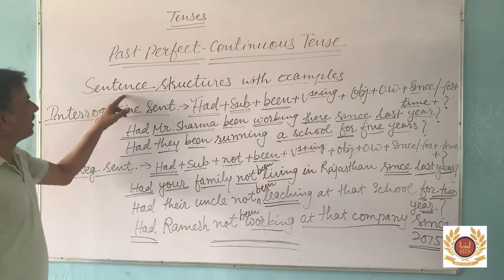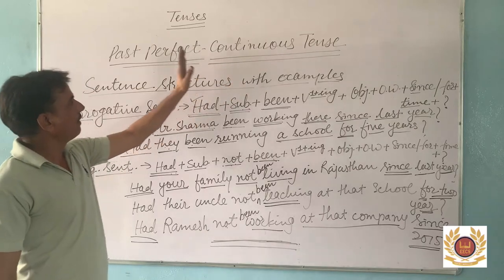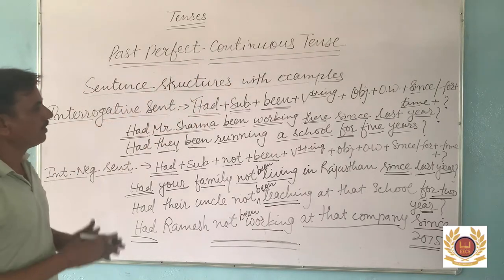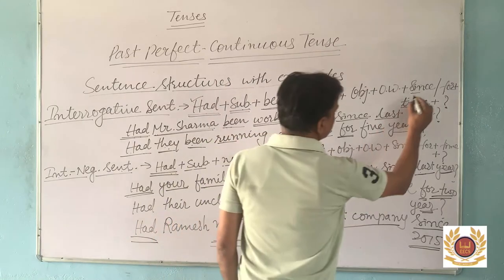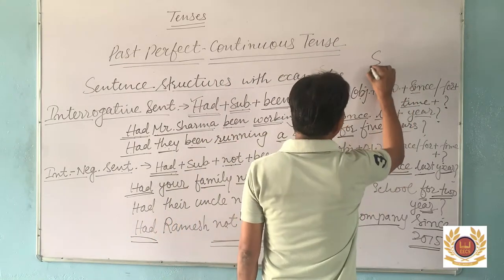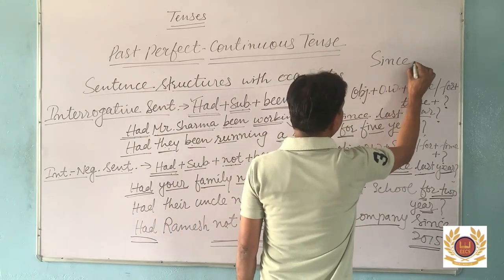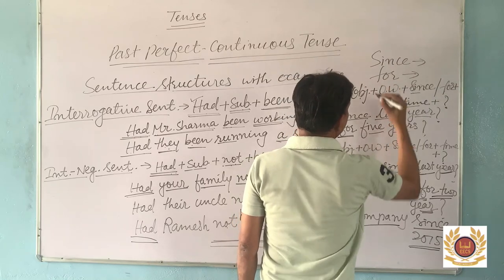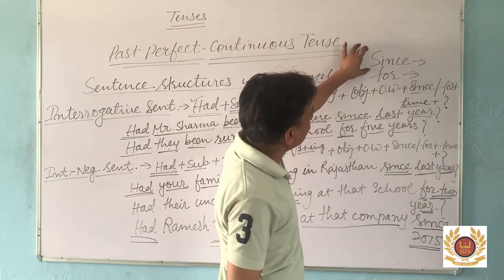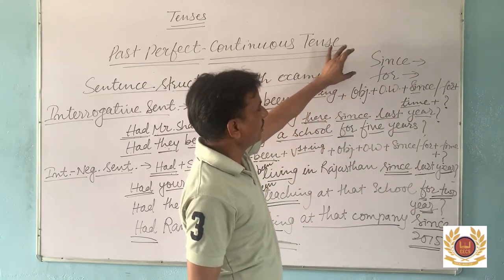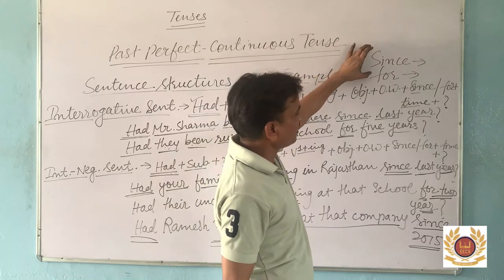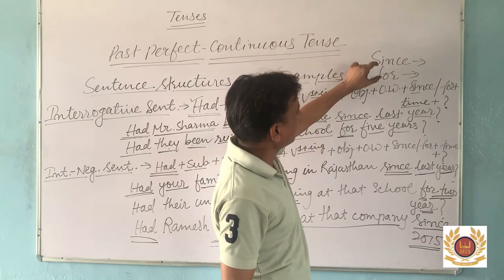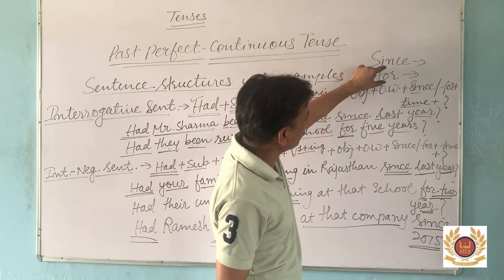In Past Perfect Continuous Tense, the two major adverbs are 'since' and 'for'. If we go back to any action and we know the particular point of timing, we use 'since'. And if we go back to any action and the time is a period — not a particular point — then we use 'for'.